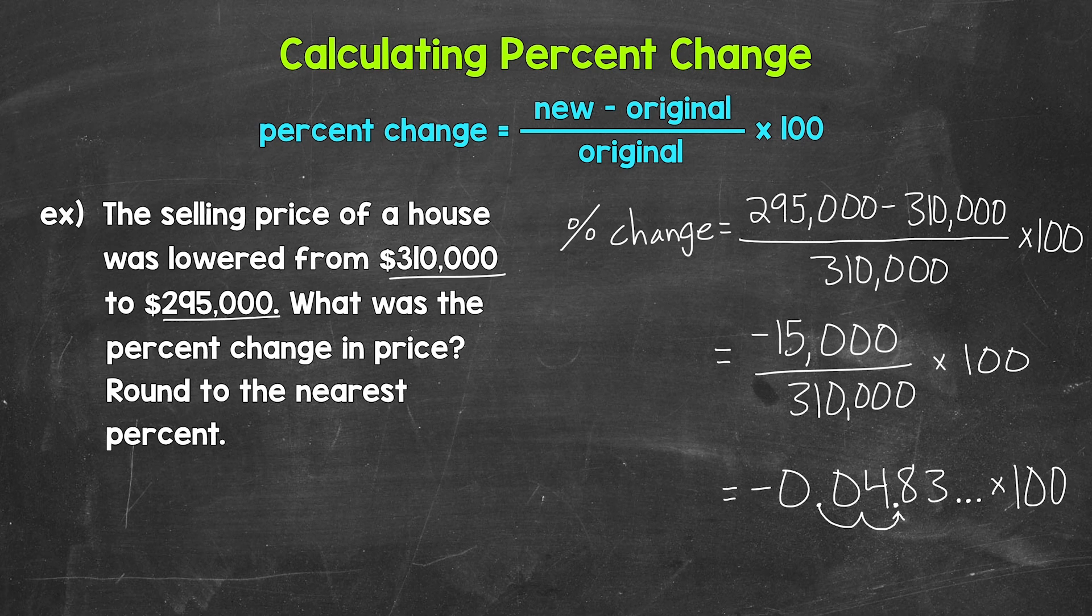So let's round this to the nearest percent, which is rounding to the ones place. We have a 4 in the ones place with an 8 to the right in the tenths. This rounds to negative 5 percent.